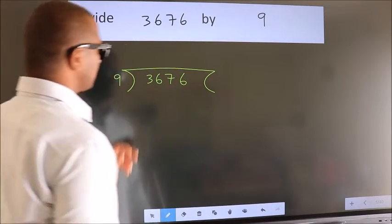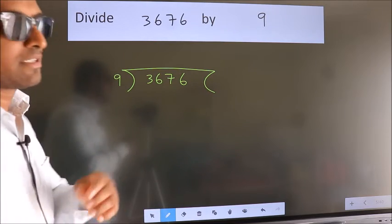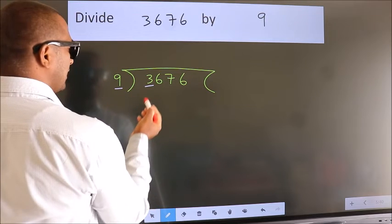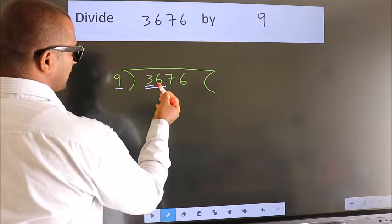This is your step 1. Next, here we have 3, here 9. 3 is smaller than 9, so we should take 2 numbers, 36.